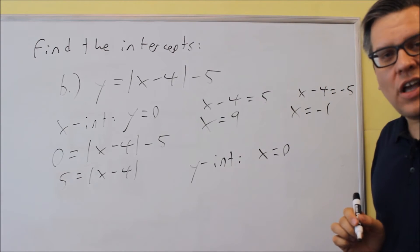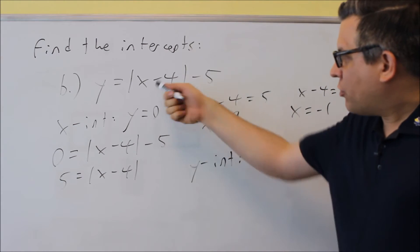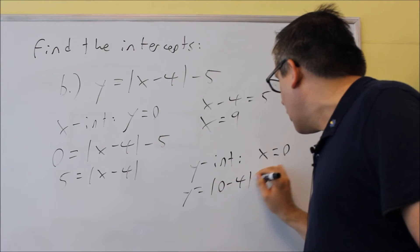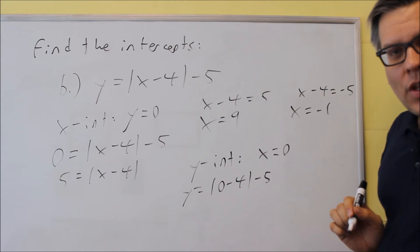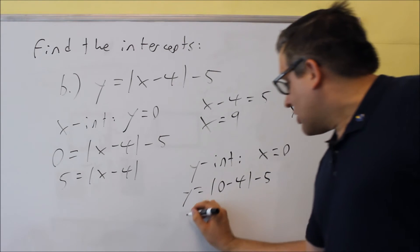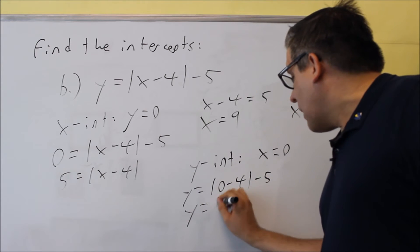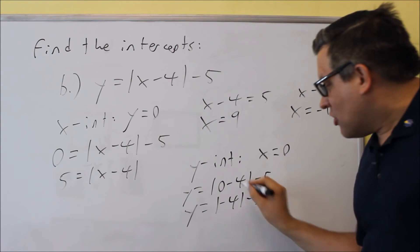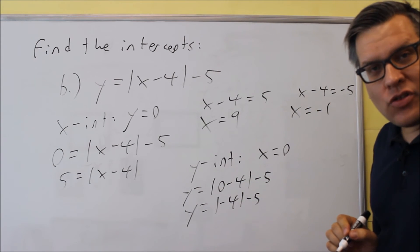Y-intercept is where you're going to put in a 0 for x. We're going to put that back into the original one. We get absolute value 0 minus 4 minus 5. Now, this part inside, we're going to get absolute value of negative 4 minus 5. Whenever you have an absolute value, it's always going to give you a positive number.